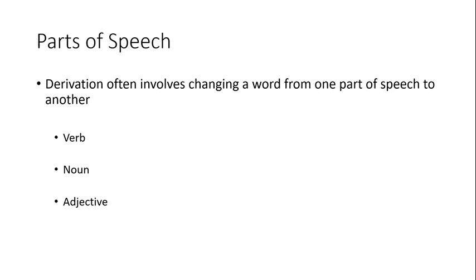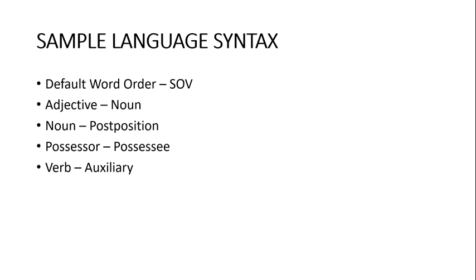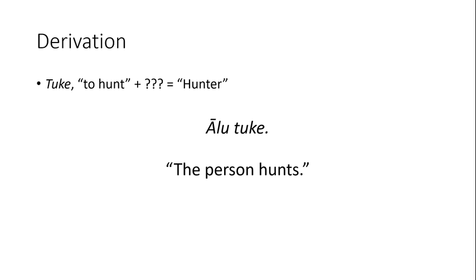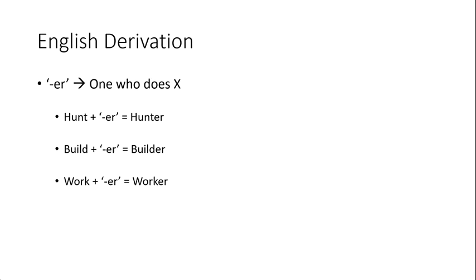But what if we want to change a word's part of speech? What if we want to create, say, a noun from a verb? We have our word for to hunt, but what if we wanted to make a word for a hunter? Recall our basic word order — the verb will always be the last word in the sentence, but adjectives come before the nouns that they modify. Because of this, the sentence person hunt will be interpreted as the person hunts. But in the reverse order, hunt person, hunt may be interpreted as a modifier of person, meaning a person who hunts. Then if this strategy is used frequently enough, the word person becomes a suffix that turns a verb into a noun meaning a person who habitually performs the verb, much like the -er suffix in English.